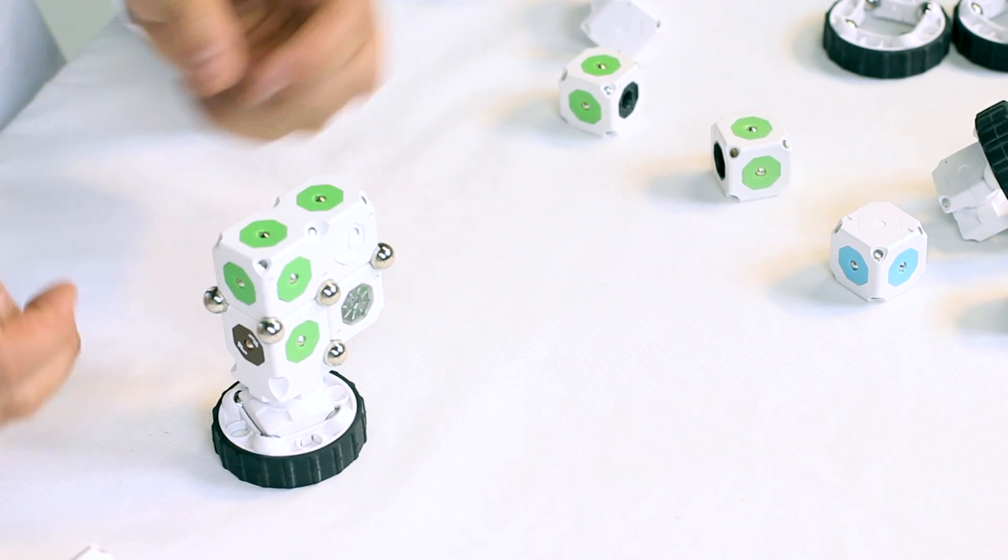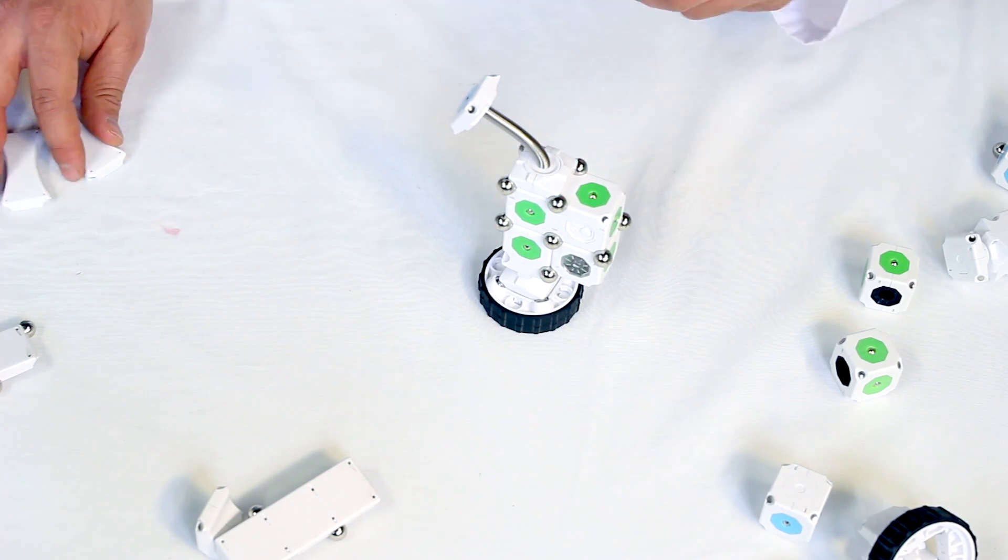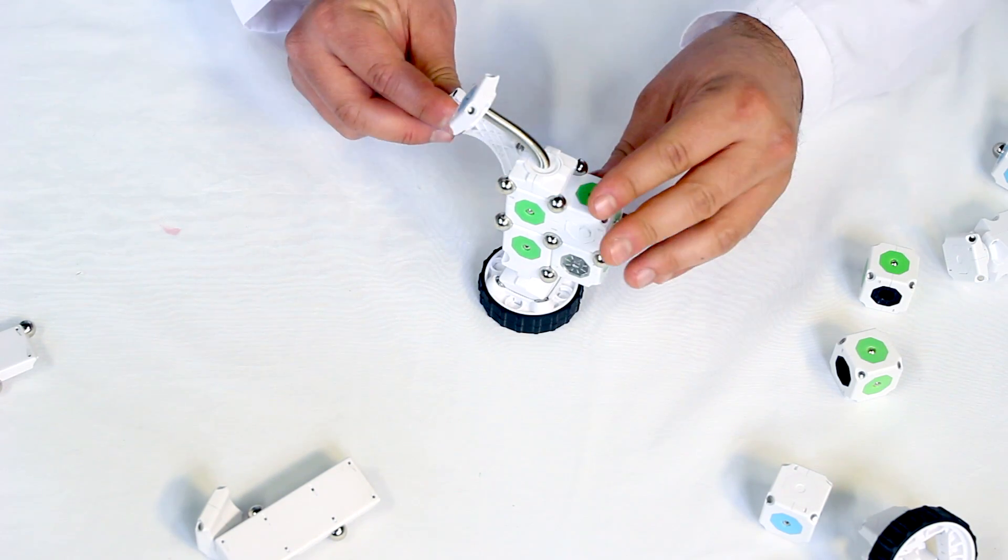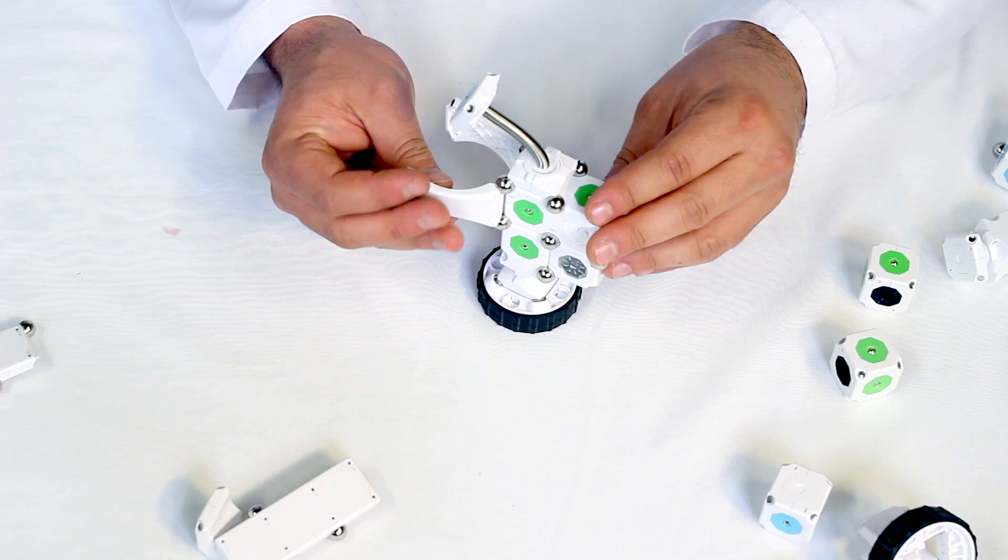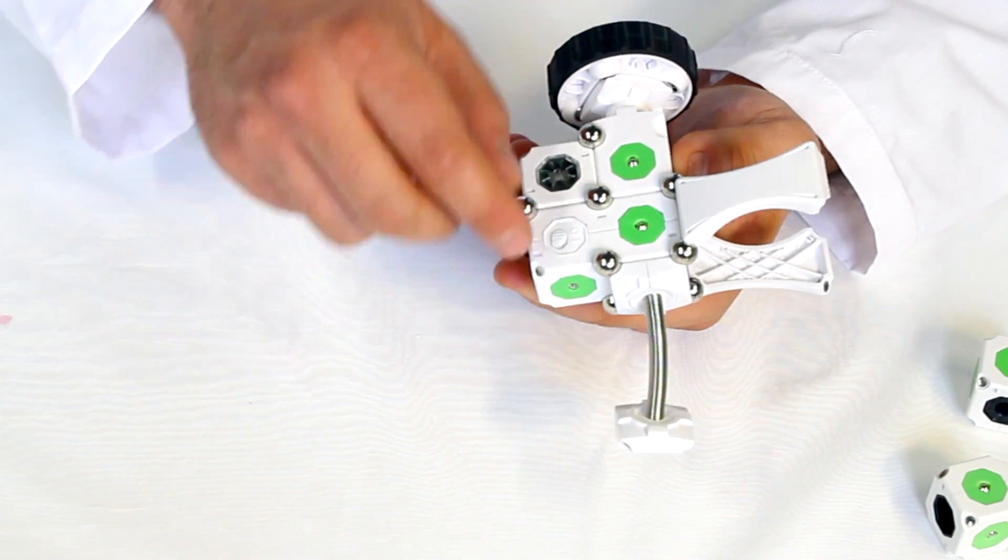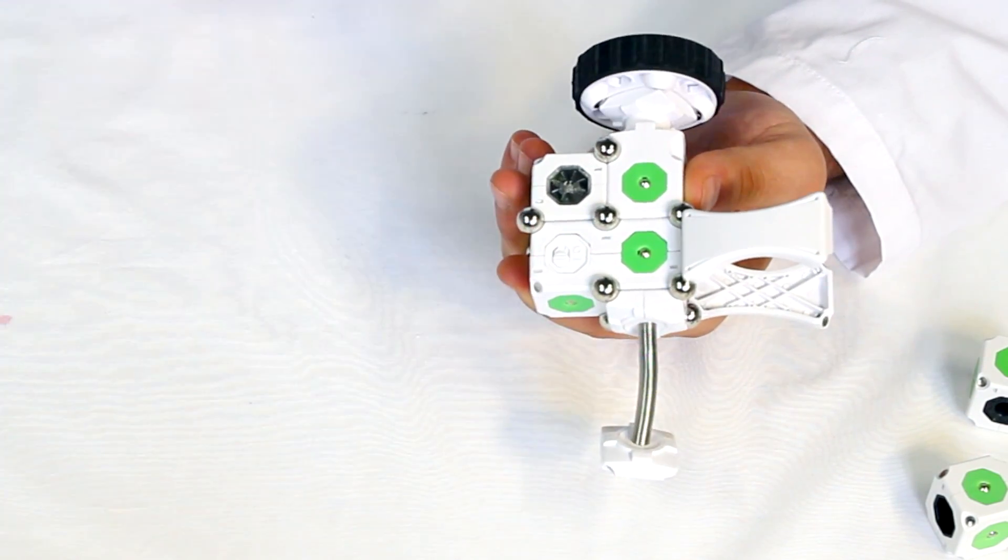The switch should face out. Bring our new friend to life by adding a flexi block for the face and arch braces for arms. Simply flip the power on and let its magical movement begin.